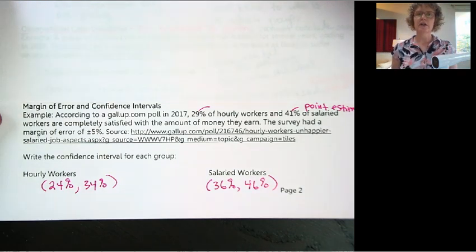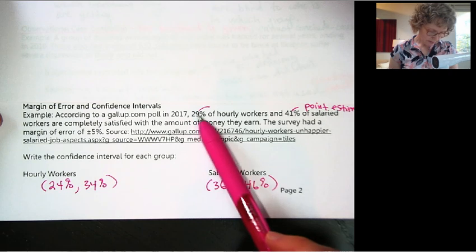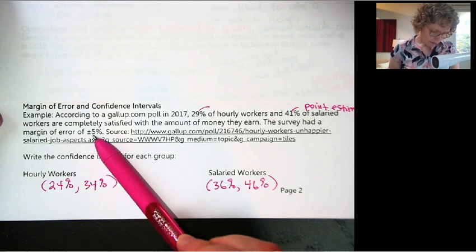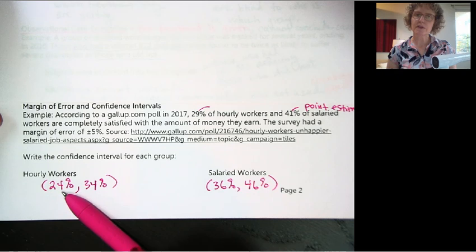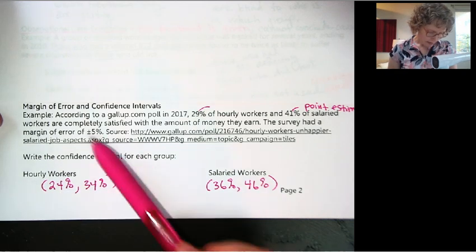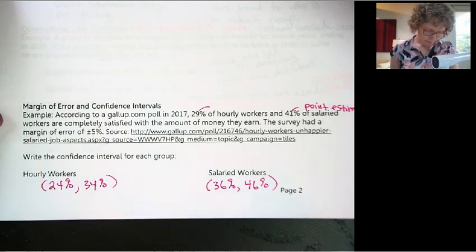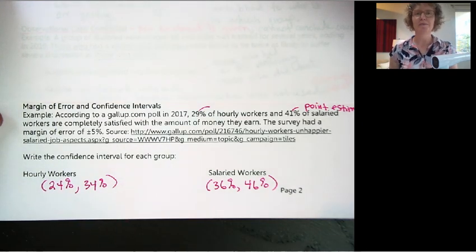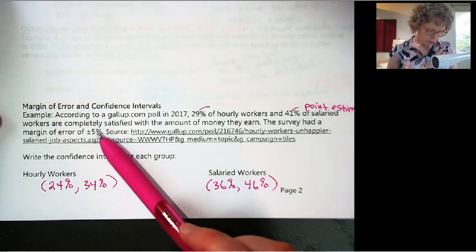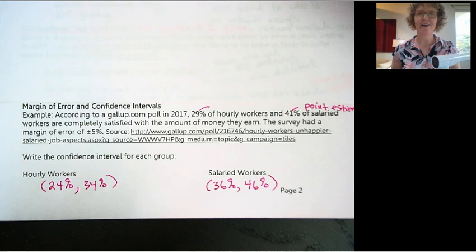So a confidence interval is found using the point estimate and the margin of error. The minus part goes first because we always put the smaller value first, and then the plus part gives you the upper number. We write them in parentheses with a comma in between. So that's the difference between margin of error and a confidence interval. Thanks for watching this video.